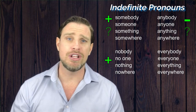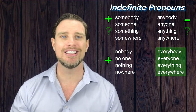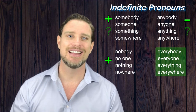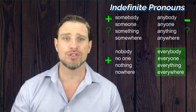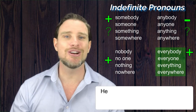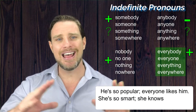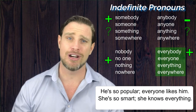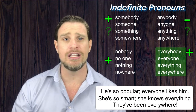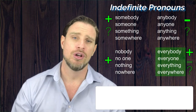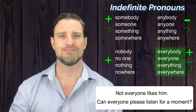And lastly, we have the indefinite pronouns starting with 'every' — so everybody, everyone, everything, and everywhere. We use these mainly in positive clauses. For example: 'He's so popular. Everyone likes him.' 'She is so smart. She knows everything.' 'They have travelled so much. They have been everywhere.' They are also used quite often in negatives and questions: 'Not everyone likes him.' 'Can everyone please listen for a moment?'